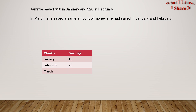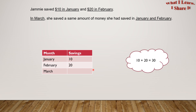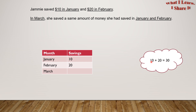In March, she saved the same amount of money she had saved in January and February. In January she saved $10 and in February she saved $20. So, $10 plus $20 equals $30. In the month of March, she saved $30.